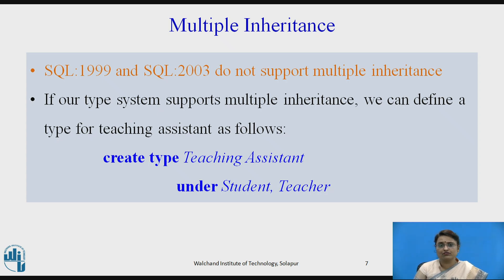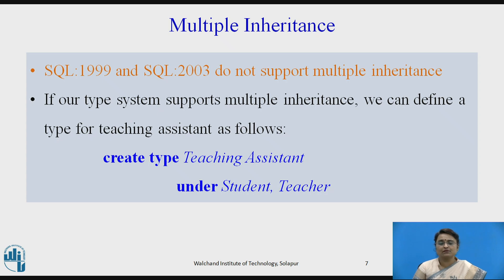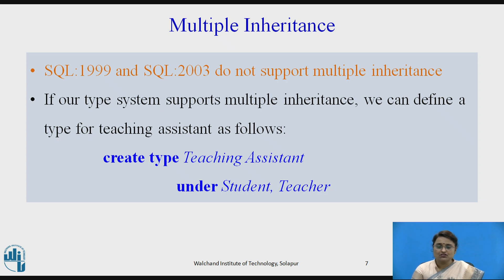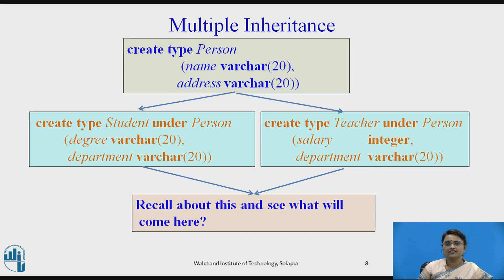These are supported by other SQL versions. Let us see how we can define multiple inheritance. Say we want to define a type called Teaching Assistant. A teaching assistant is a person who is both a teacher and a student — studying in higher classes while also teaching junior classes. So a teaching assistant holds the characteristics of both student and teacher. We define this type as: create type TeachingAssistant under Student and Teacher.